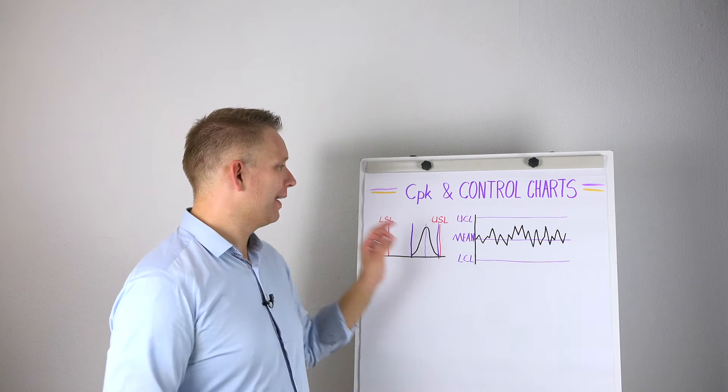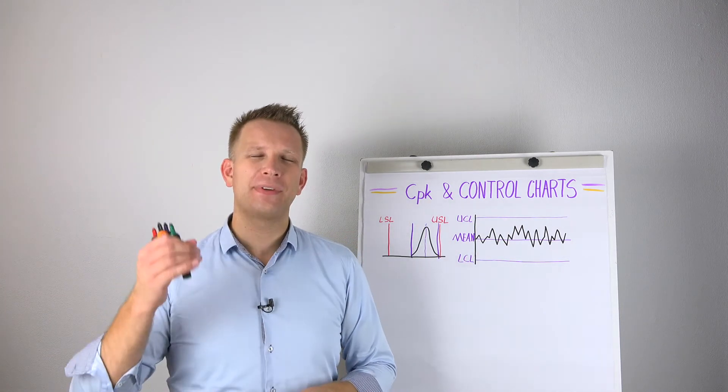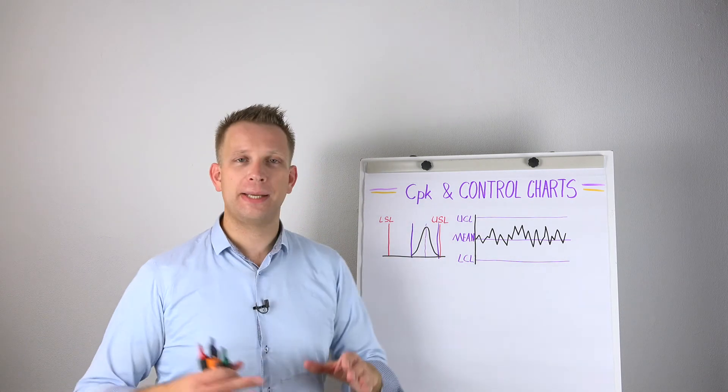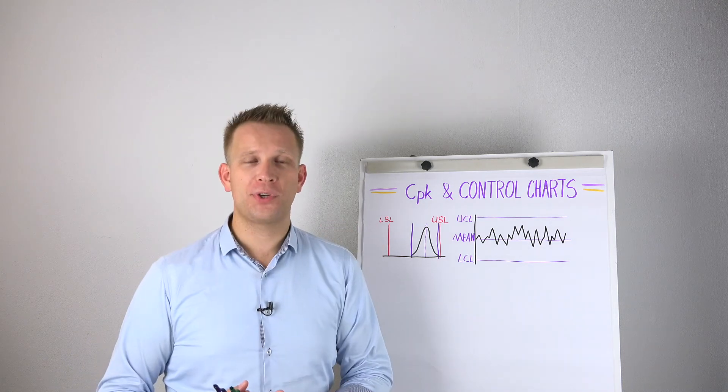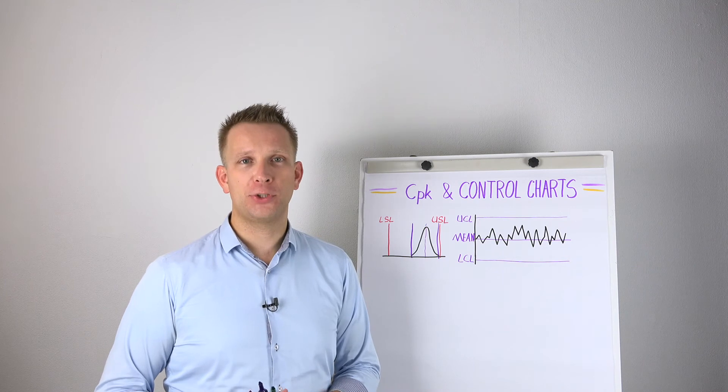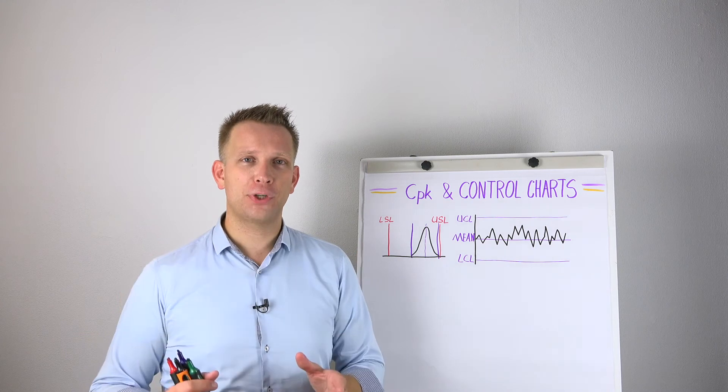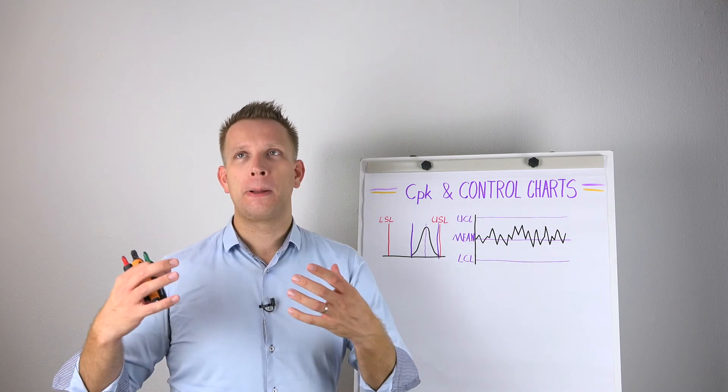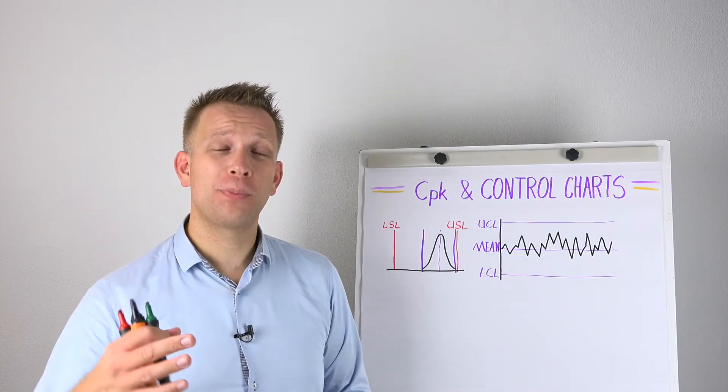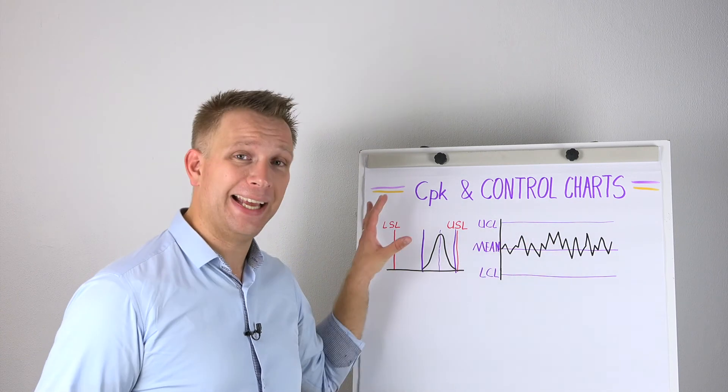And so there you have it. CPK, SPC, they are different systems, they even have a different base, the mean is not the same, the limits are not the same, what they try to do for your process is not the same. Yes, they are both in the Six Sigma Toolkit, and they are both very strong parts of that toolkit, but they have different goals and they use different numbers, different concepts that you apply. So I hope that this clarified for you what the difference is between SPC and CPK.